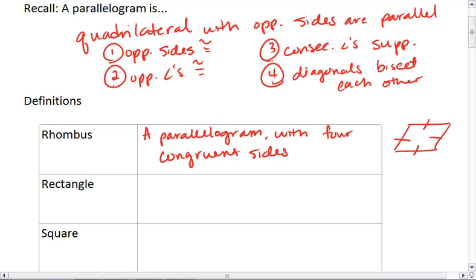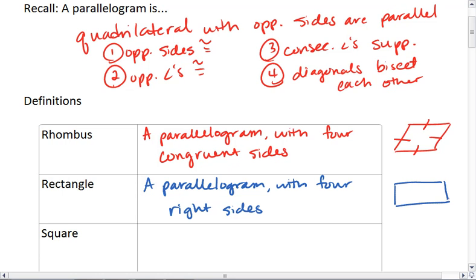A rectangle is also a parallelogram, but it is with four right angles. A rectangle is an equiangular parallelogram. So opposite sides are parallel, and then we get four right angles.